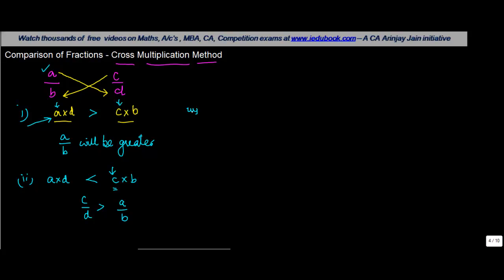Situation 3 will be a into d is equal to c into b. If this is the case, then we know what does this mean? This means that these are equal fractions or a upon b will be equal to c upon d.